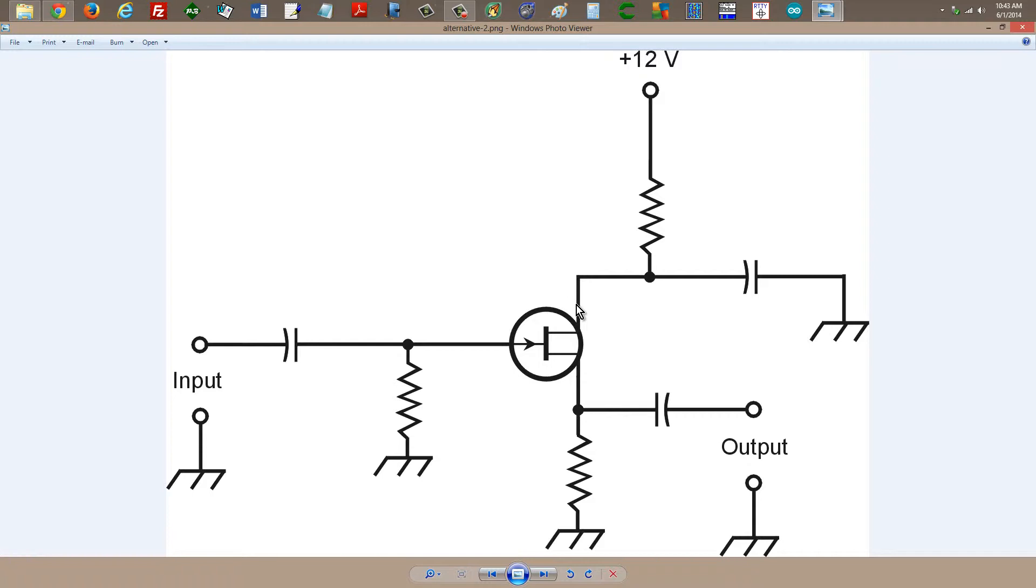Sometimes it's also referred to as a common drain or grounded drain configuration. This capacitor right here grounds the drain for signal. And this resistor allows for the DC voltage to appear on the drain and not get shorted to ground, courtesy of that blocking capacitor. It also serves as a bypass. So it's both a bypass and a blocking capacitor.